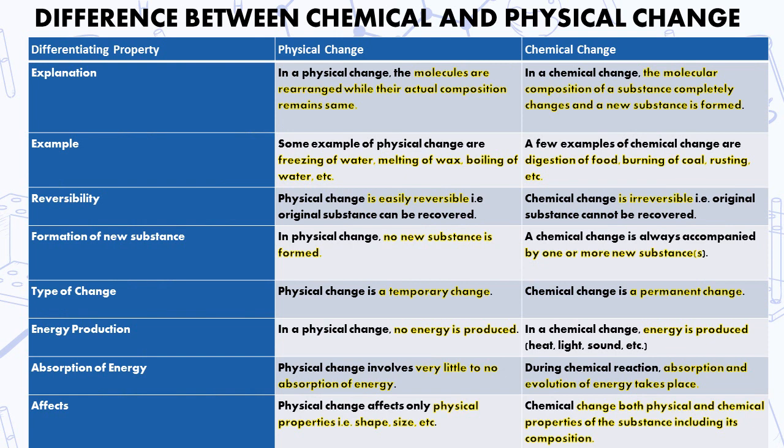Let us see the difference between physical and chemical changes. In a physical change, the molecules are rearranged with their actual composition remaining same. In chemical change, the molecular composition of substance completely changes and a new substance is formed. Some examples of physical changes are freezing of water, melting of wax, boiling of water. For example, chemical changes are digestion of food, burning of coal, rusting, etc.